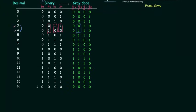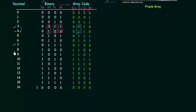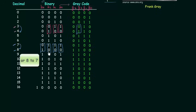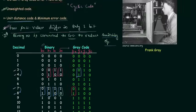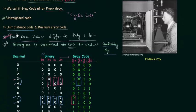Let's take another example — 7 and 8. In binary you can see b0 is changing, b1 is changing, b2 is changing, and b3 is also changing. So to switch from 7 to 8 we need to change all 4 bits. But in gray code, g0 is the same, g1 is the same, g2 is the same, and only g3 is changing. You can check any other case and you will find only one bit changes in gray code, so this statement is now verified.